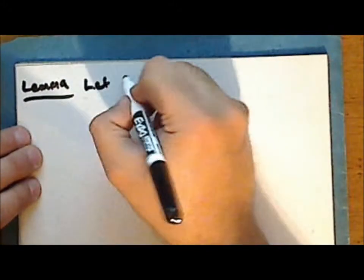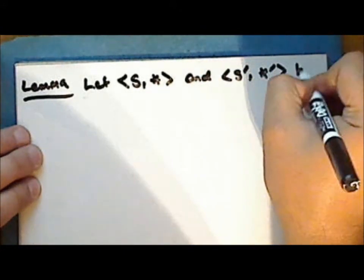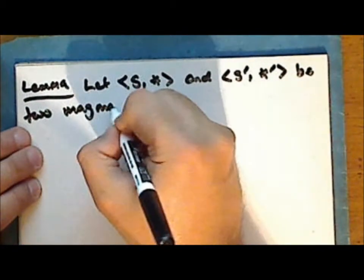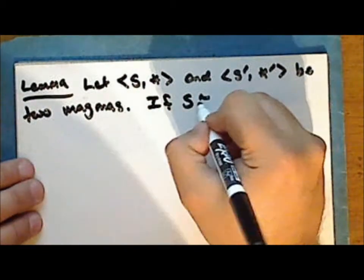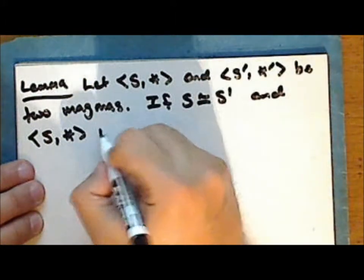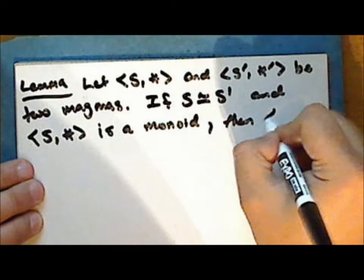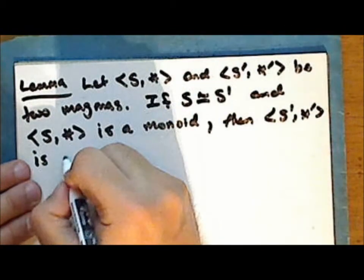Let S together with the binary operation star, and S' together with the binary operation star prime, be two magmas. If S is isomorphic to S' and the structure S with operation star is a monoid, then the structure S' with operation star prime is also a monoid.